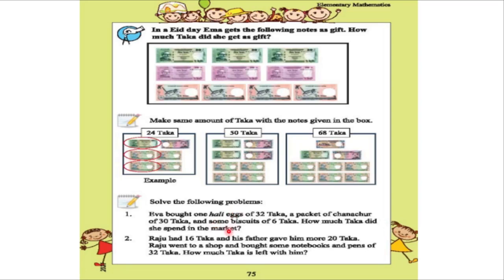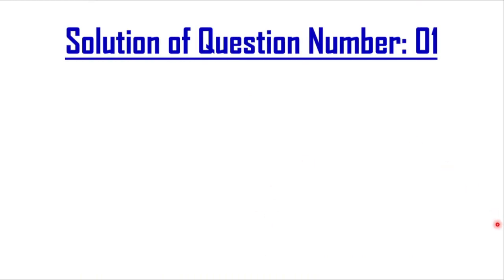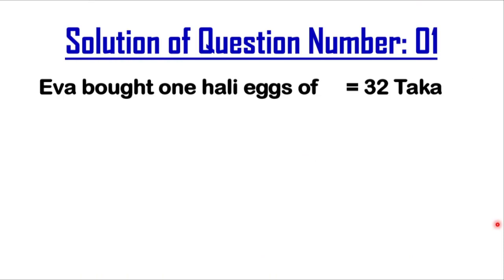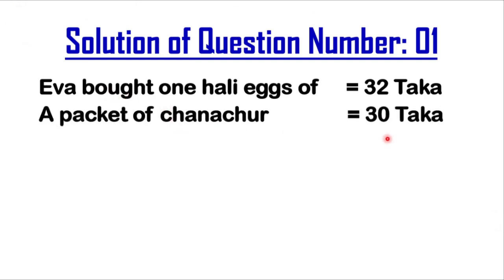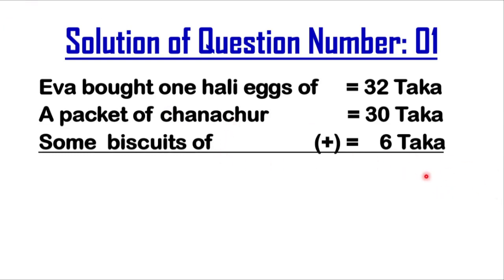Now let's collect the data from the question. Eva bought one hali of eggs for 32 taka, a packet of chanasur for 30 taka, and some biscuits for 6 taka. Whenever you add these three amounts, the total will increase, which is why you should apply the concept of addition. On the board, write 'Solution of Question Number 1.' Write 32, then 30, then 6 on the next lines.